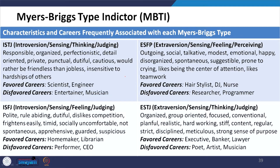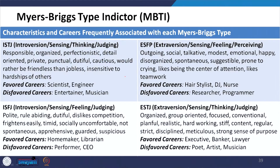For ESTJ — Extraversion, Sensing, Thinking, Judging — the person is organized, group-oriented, focused, conventional, planful, realistic, hardworking, disciplined, meticulous, and has a strong sense of purpose. The main difference between ISTJ and ESTJ is introvert versus extrovert. If a person is extroverted, their leadership style will be more appropriate for executive, banker, or lawyer roles.